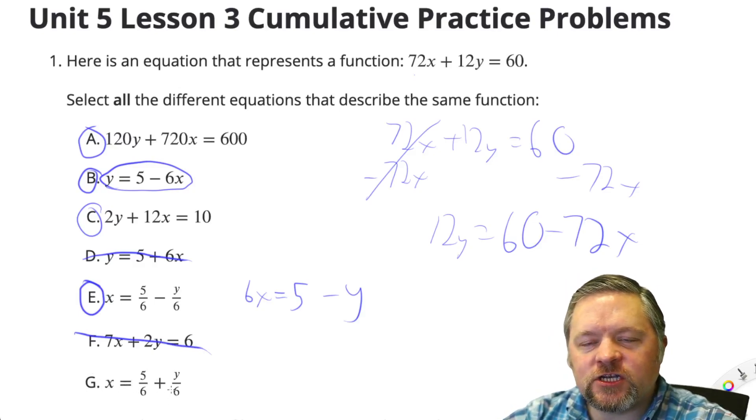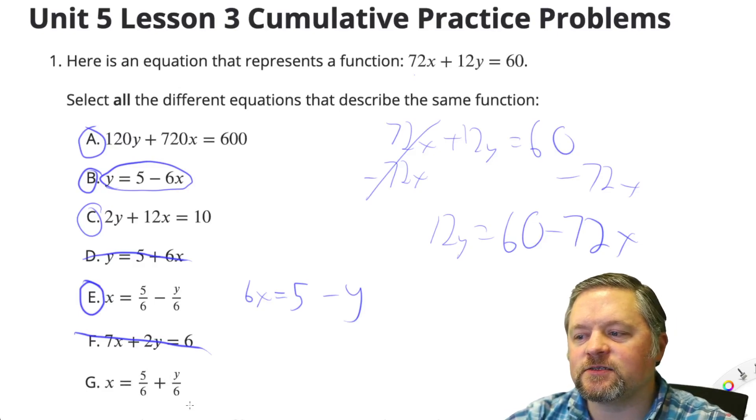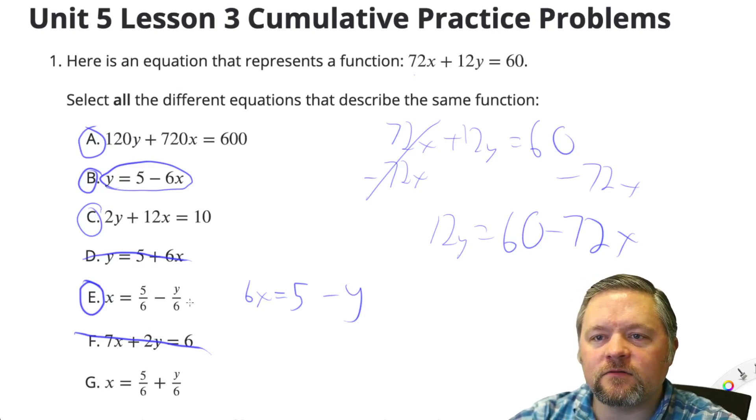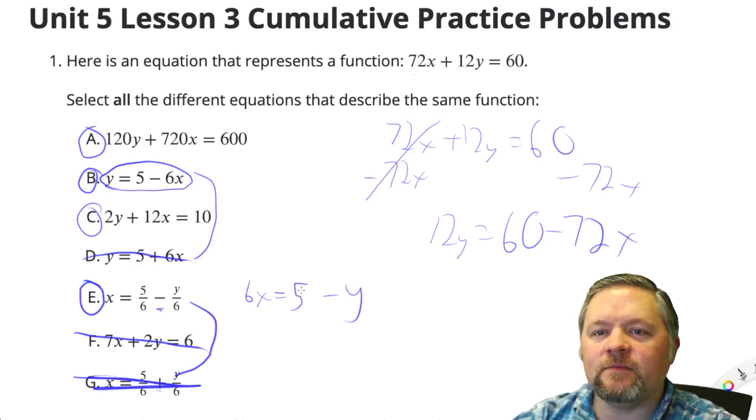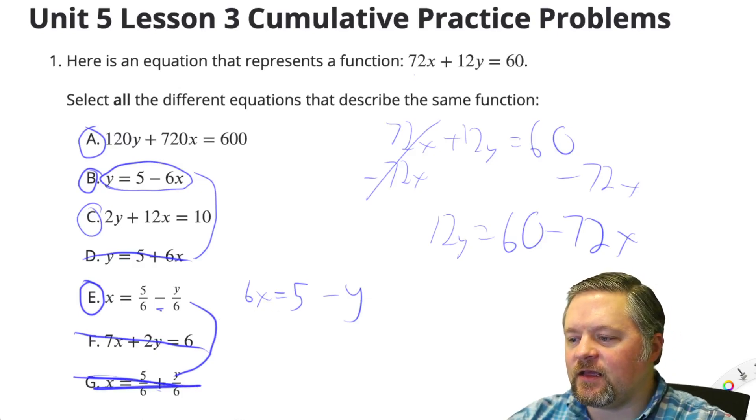How about G? X equals 5 over 6 plus y over 6. X equals 5... Those two are just like these two. We have to subtract there. If we try and add there, it doesn't work. So A, B, C, and E work.